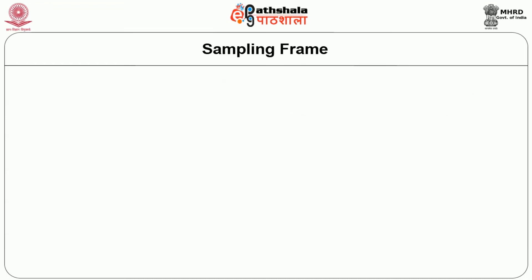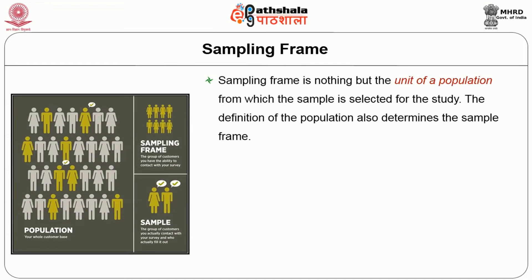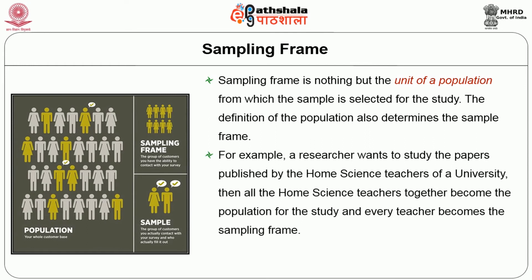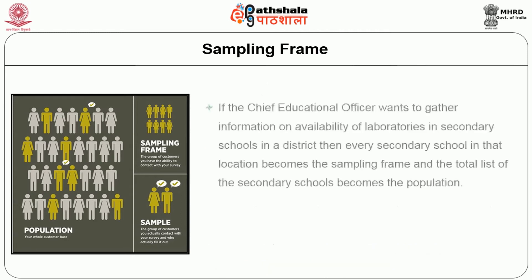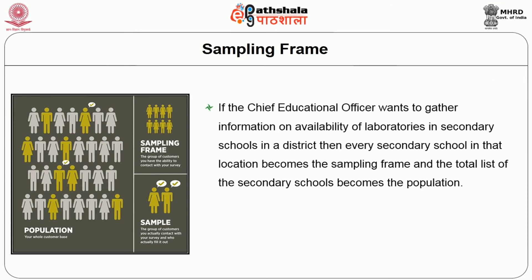A sampling frame is the unit of a population from which the sample is selected for the study. The definition of the population also determines the sampling frame. For example, if a researcher wants to study papers published by home science teachers of a university, all the home science teachers together become the population, and every teacher becomes a sampling frame unit. If the chief educational officer wants to gather information on availability of laboratories in secondary schools in a district, every secondary school in that location becomes the sampling frame, and the total list of secondary schools becomes the population.